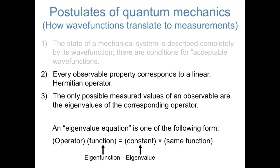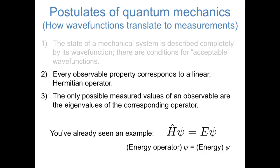This is a very general type of problem, and it's one that we'll see all the time in quantum mechanics. We've already seen an example of an eigenvalue equation. The Schrödinger equation itself, H-psi equals E-psi, is an eigenvalue equation. The Hamiltonian operator, which is the energy operator, applied to some wave function psi, is equal to a constant — the measured energy — times that same wave function psi.